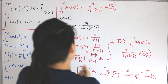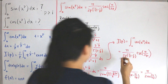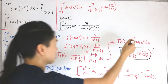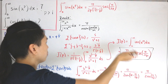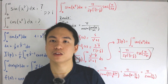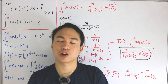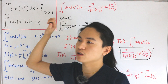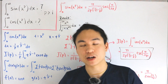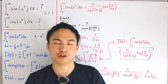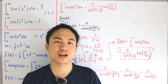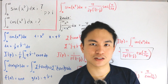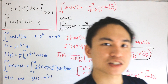In conclusion, we have computed both generalized Fresnel integrals in closed form: ∫₀^∞ sin(x^p) dx equals (π/2p)·Γ(1−1/p)·sec(π/(2p)), and ∫₀^∞ cos(x^p) dx equals (π/2p)·Γ(1−1/p)·csc(π/(2p)), valid for p > 1. Pretty cool!